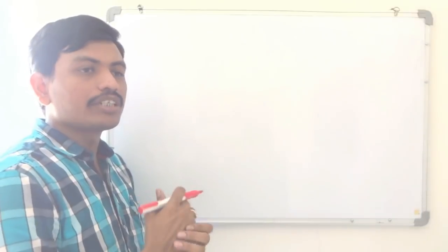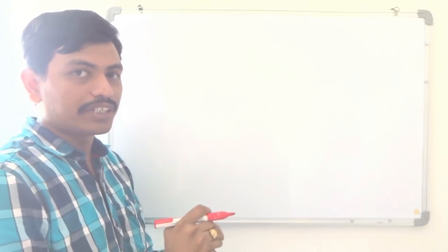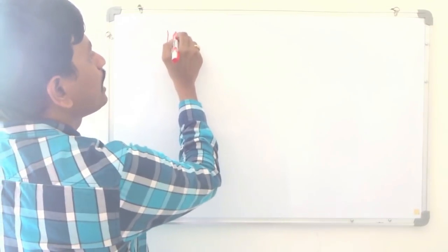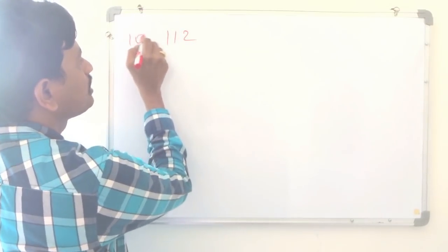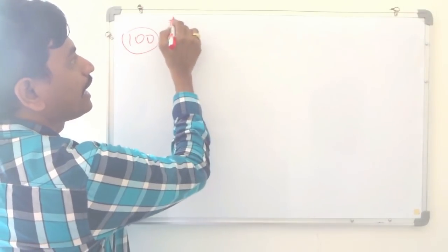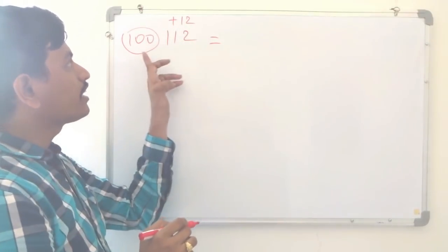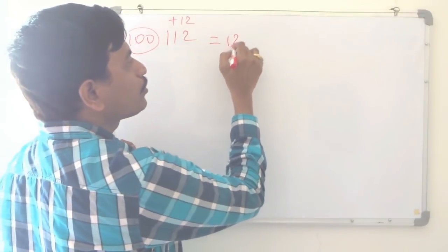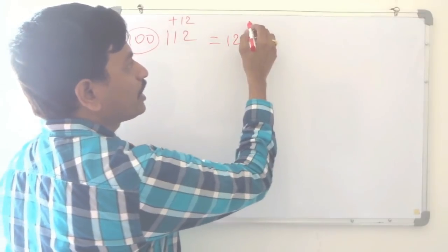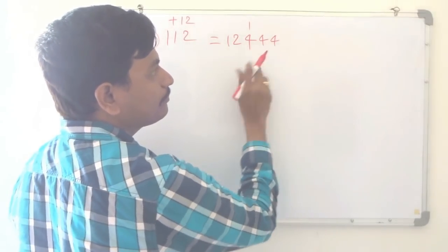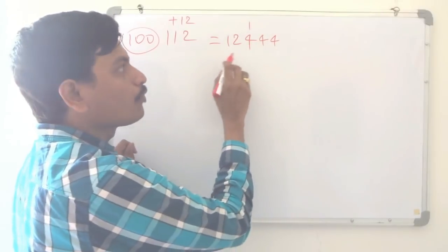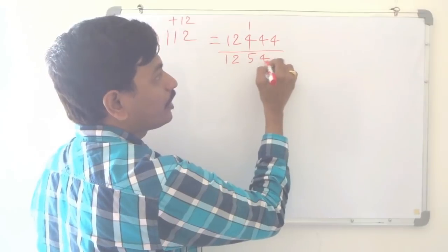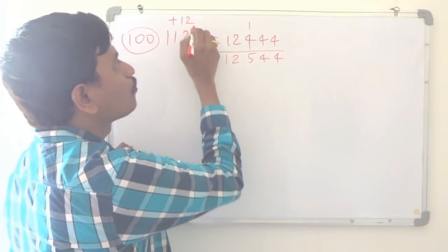Here, the same method as for numbers nearer to 50 applies, but we need to know squares from 10 to 20. I will take 112, which is nearer to 100. 112 is how much bigger than 100? Plus 12. Since it is nearer to 100, we add to the number itself: 112 plus 12 is 124. And 12 squared is 144; we need 2 digits, so carry the 1: 24 plus 1 is 25. So 12,544 is the square of 112.